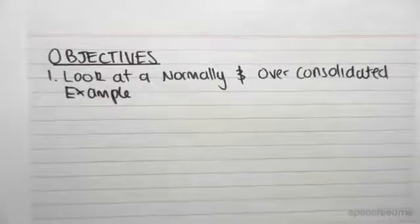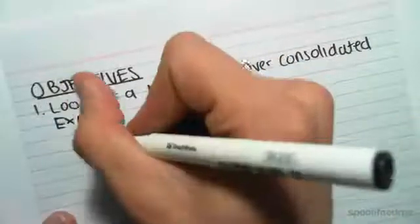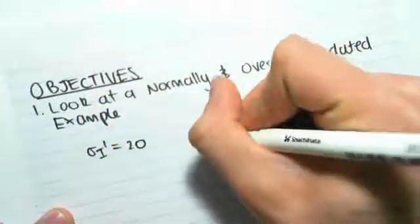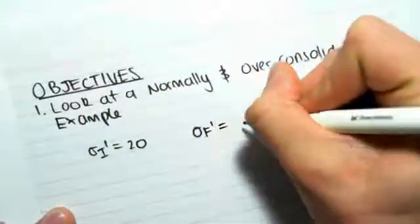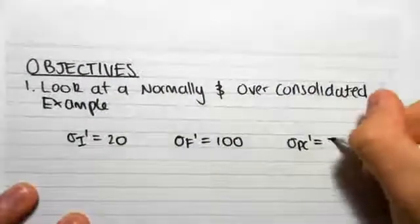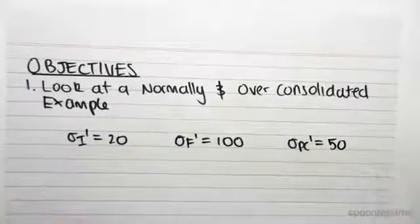So the way this would happen is that in the question, they would give us some values like this. Sigma I dash equals 20, Sigma final dash equals 100, and Sigma PC dash equals 50. So if we were to draw this...